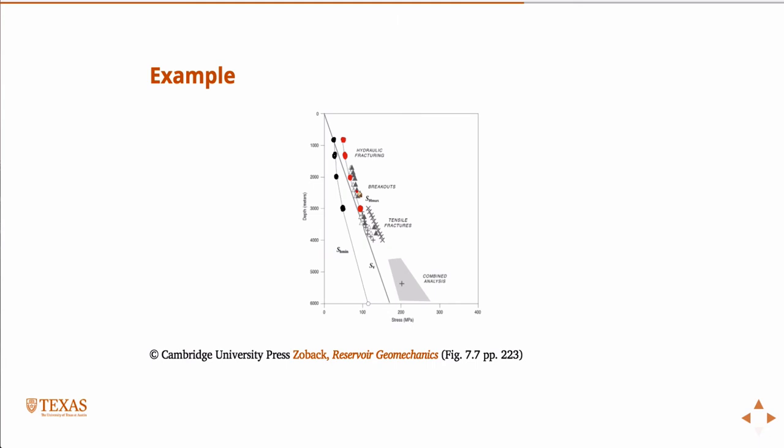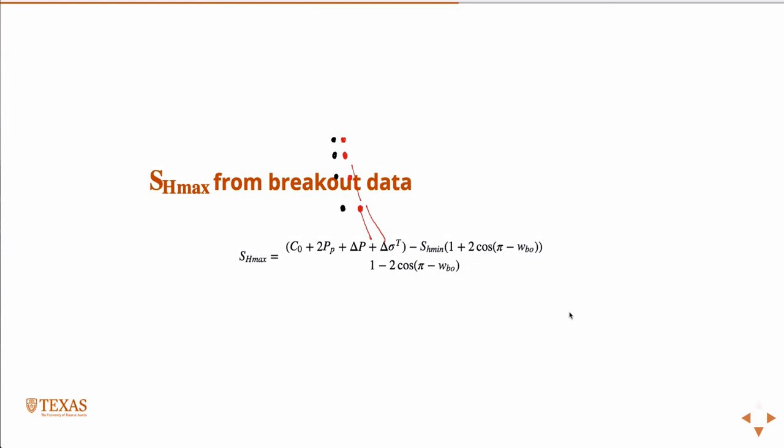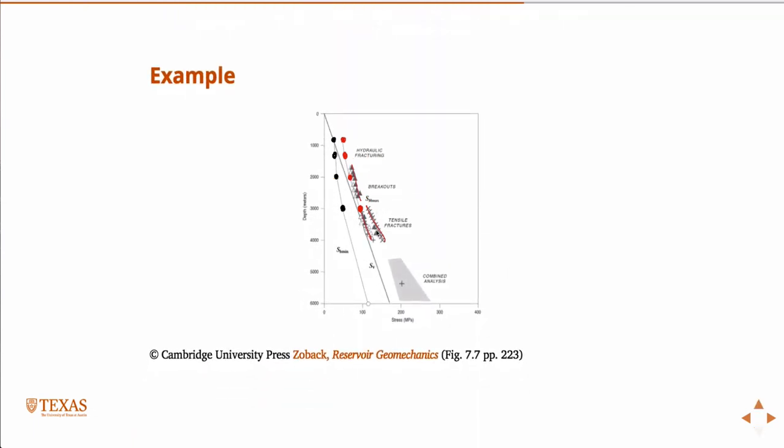Because again, this was a well drilled purely for experimental purposes. So they took the extra care to do some additional testing that wouldn't be part of a normal drilling operation. However, so in this case they actually knew the real values of SH-max from direct measurements. And then these triangles and X's out here actually correspond to methods where they inferred SH-max through this equation and observations of breakouts and other things.